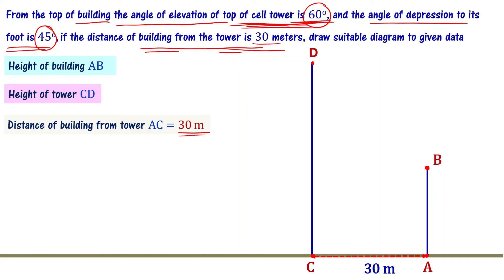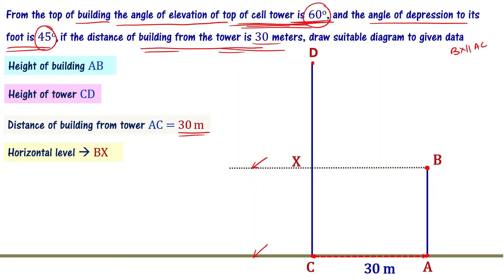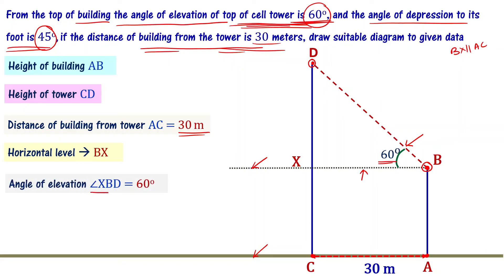Point B is the eye level of the person. From B, draw one horizontal line BX — that is the horizontal level. We can say that BX is parallel to AC. Now from point B, connect to point D with a line of sight. This line of sight makes an angle with the horizontal level — that angle is the angle of elevation. That angle is 60 degrees. So angle XBD is equal to 60 degrees. Now we need to mark the angle of depression of 45 degrees.